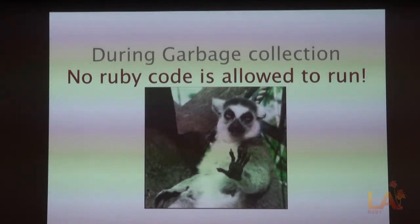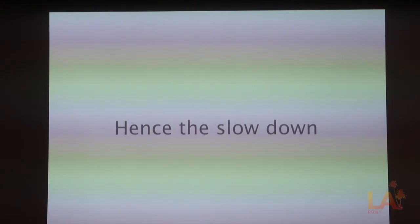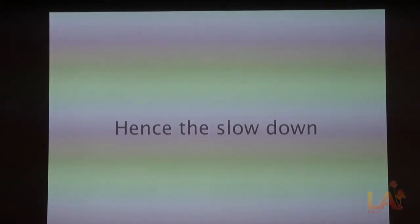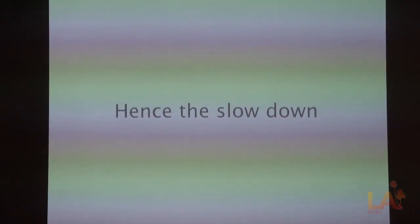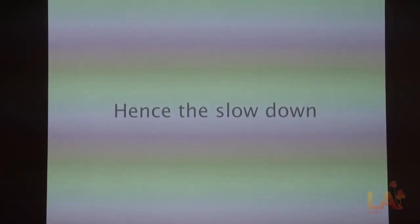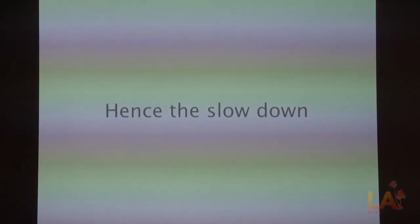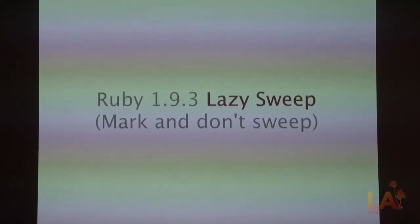This is what happens during garbage collection and why it's slow: no Ruby code is allowed to run when the garbage collector is running. Hence the slowdown. This can happen anywhere in your code. The moment you need a new object and there's no space in the free list, everything stops while the garbage collector runs. You could be doing something as simple as i equals zero and boom — garbage collection.